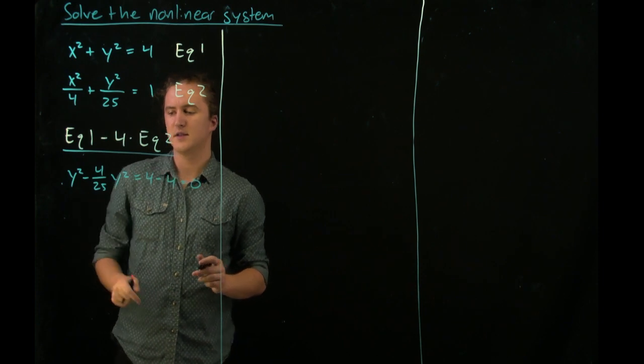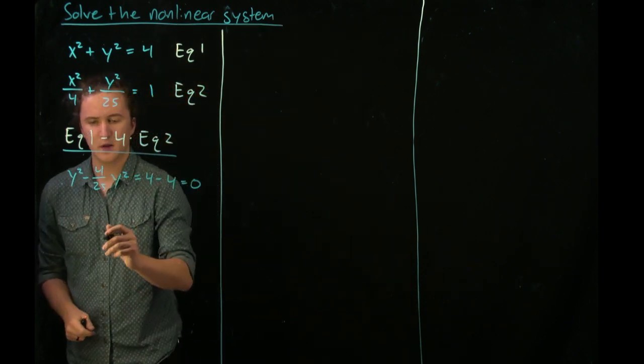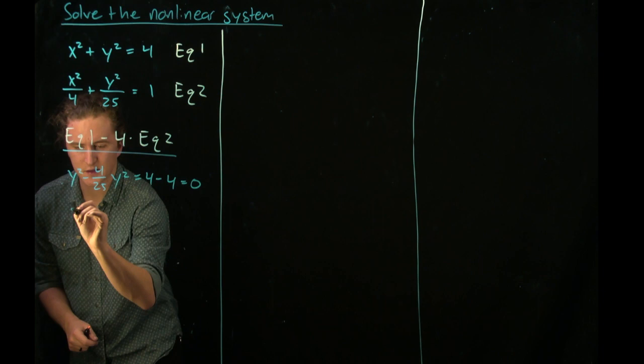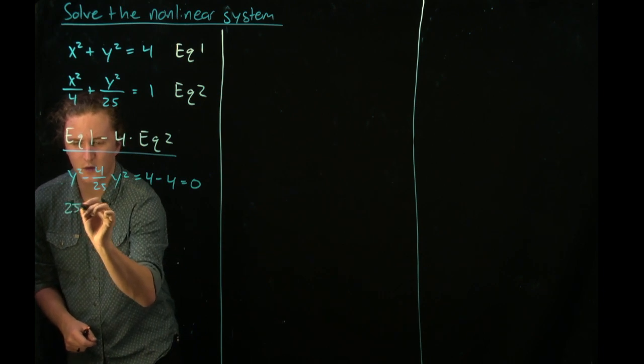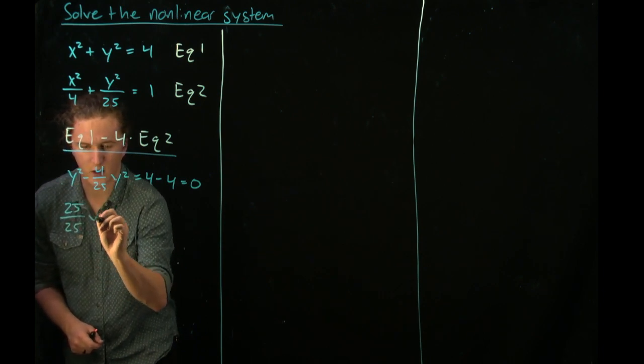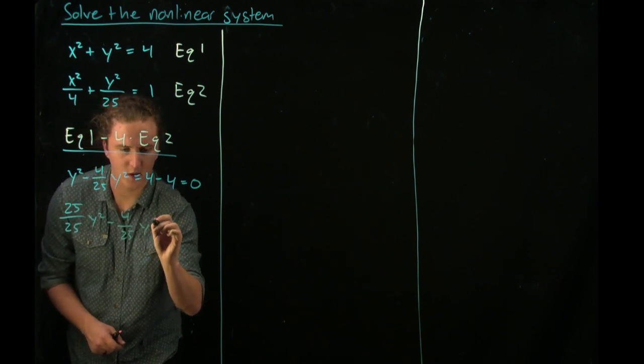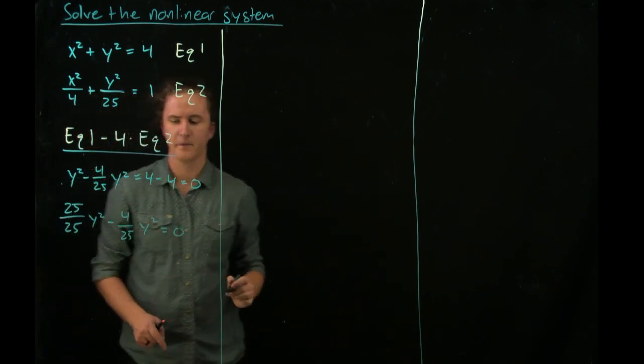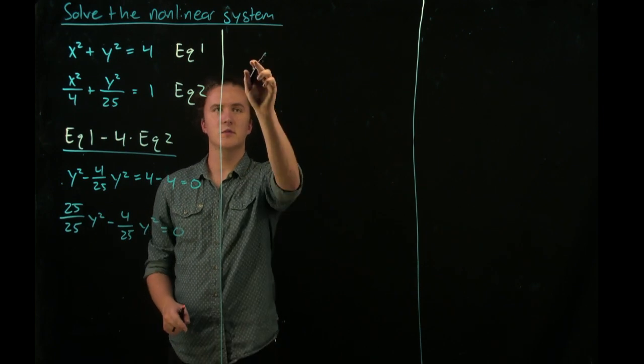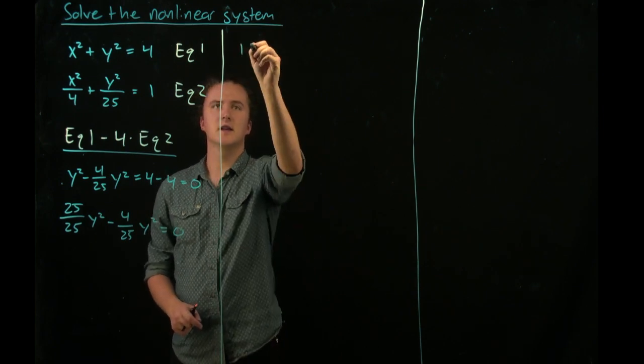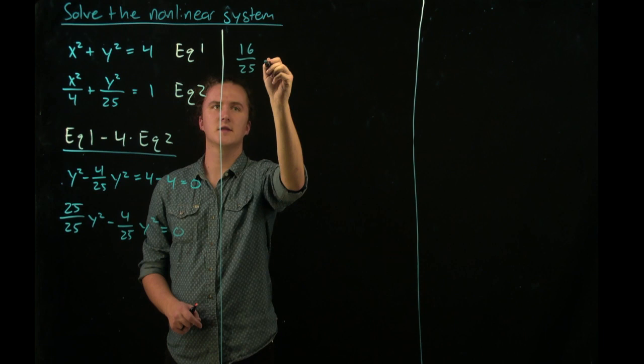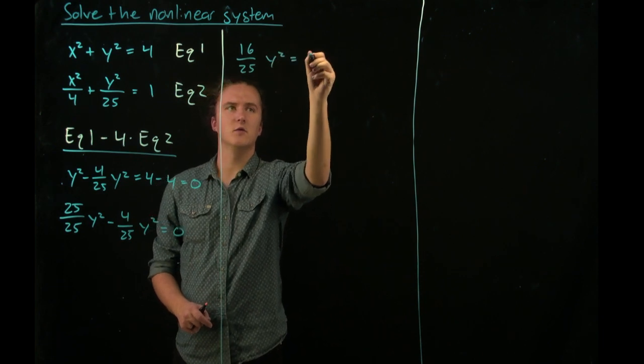This can be easily rewritten as 25 over 25 y squared minus 4 twenty-fifths y squared equals 0. Combining like terms tells us that 16 twenty-fifths y squared is equal to 0.